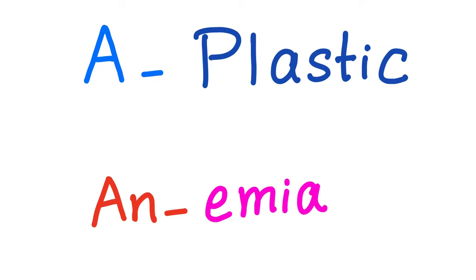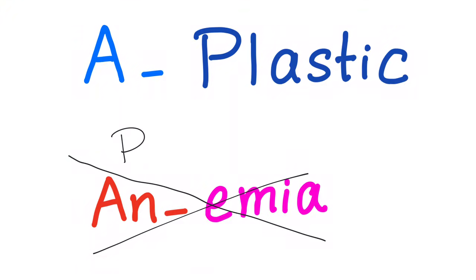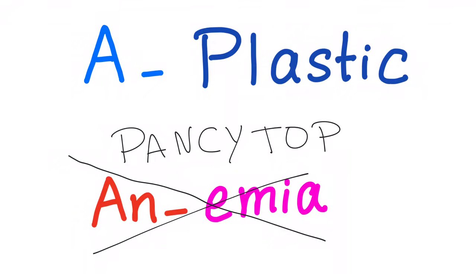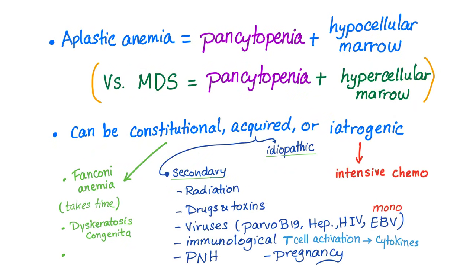Aplastic anemia is a misnomer — the name is incorrect. The correct term is pancytopenia. It's not just anemia. Basically, aplastic anemia is a pancytopenia and a hypocellular bone marrow. Pancytopenia means anemia, leukopenia, thrombocytopenia, and the marrow itself has very few cells.